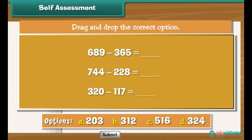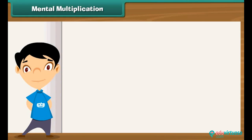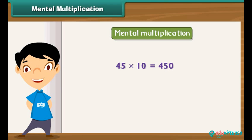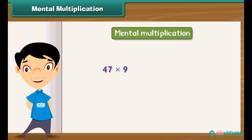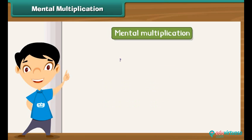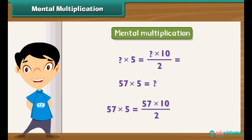Subtract the second number from the first and choose the correct difference. Having learnt mental addition and subtraction, let us proceed to mental multiplication. To multiply a number by 10 or its multiples, add the same number of zeros to the result as in the multiplier. To multiply by 9, multiply by 10 first and then subtract the number itself from the result. For example, 47 times 9: multiply 47 by 10 to get 470, then subtract 47 to get 423. To multiply by 5, multiply by 10 first and then divide the result by 2. For example, 57 times 5: multiply 57 by 10 to get 570, then divide by 2 to get 285.